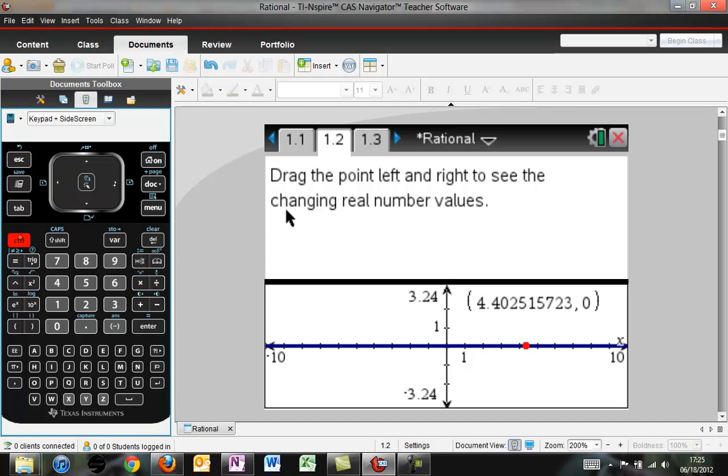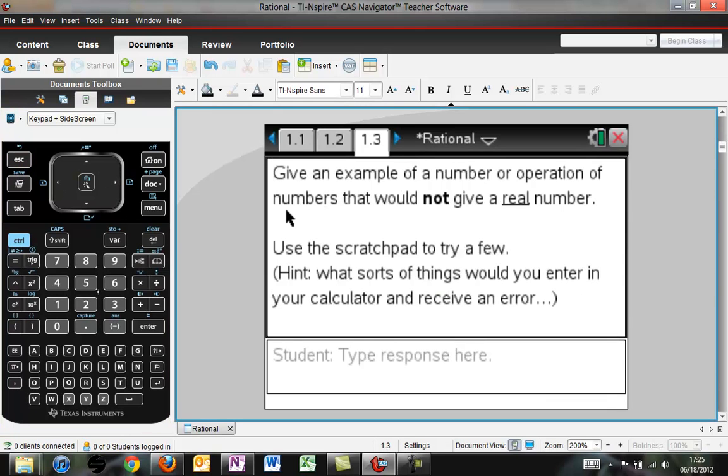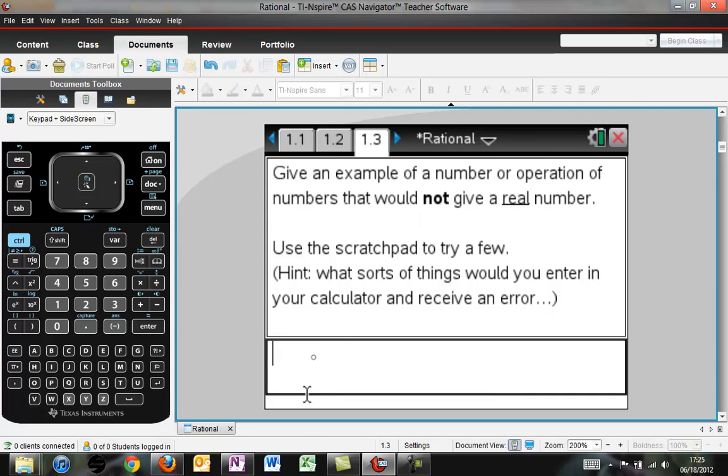If I go forward another page, I'll see an example where I have a note page here and a student response. When you type a response in, this thing says give an example of a number that would not give a real number. So, 9 divided by 0 would not be a real number. I would press tab to actually submit that.